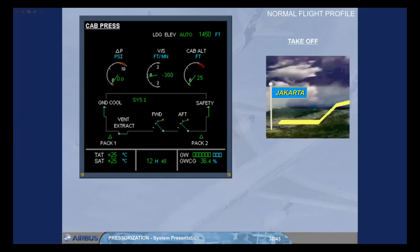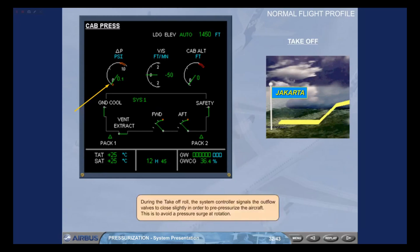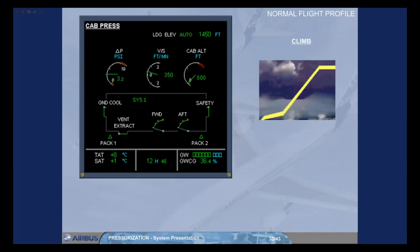During the takeoff roll, the system controller signals the outflow valves to close slightly in order to pre-pressurize the aircraft. This is to avoid a pressure surge at rotation. At lift-off, the controller initiates the climb phase and cabin altitude varies according to a fixed law taking into account the actual rate of climb of the aircraft. The outflow valves will move as required to achieve this.